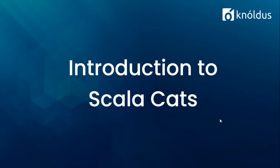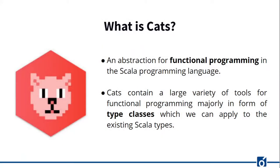Let's start with the introduction. Cats is a library which provides abstraction for functional programming in the Scala programming language. The name Cats is a playful shortening of the word 'category.' Cats is a lightweight, modular and extensible library for functional programming. It contains a wide variety of functional programming tools and allows developers to pick and choose the ones they want. The majority of these tools are delivered in the form of type classes that we can apply to existing Scala types. Cats brings abstraction to the Scala ecosystem — terms like type classes, Monads, Monoids, applicatives, and functors are the abstractions we're talking about.